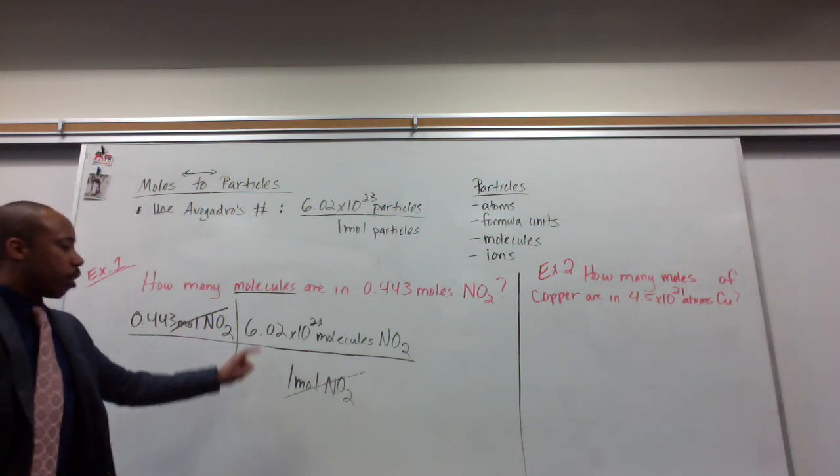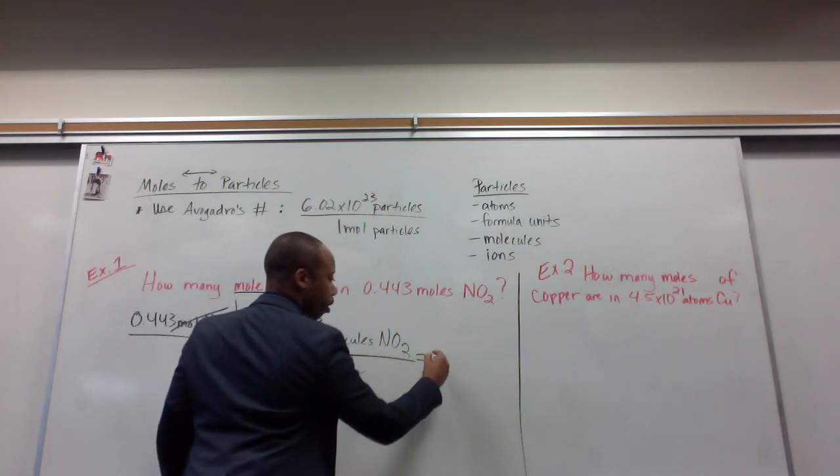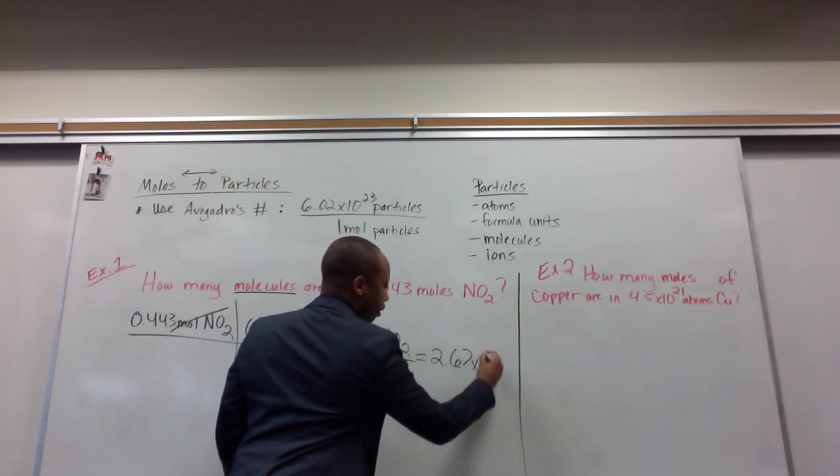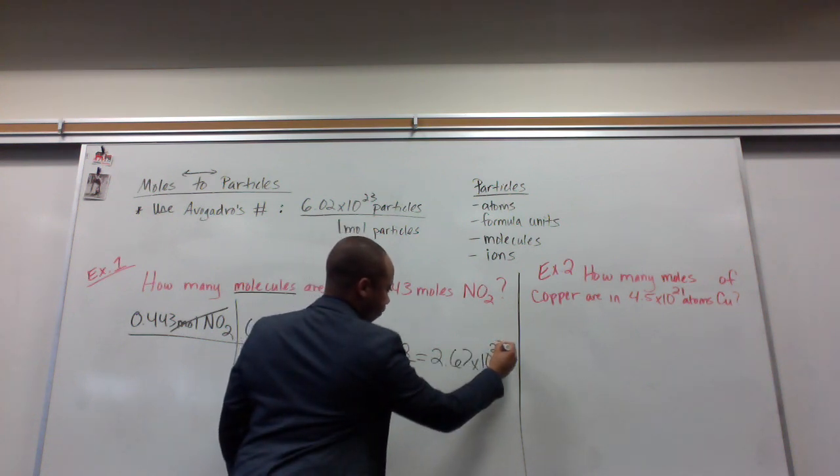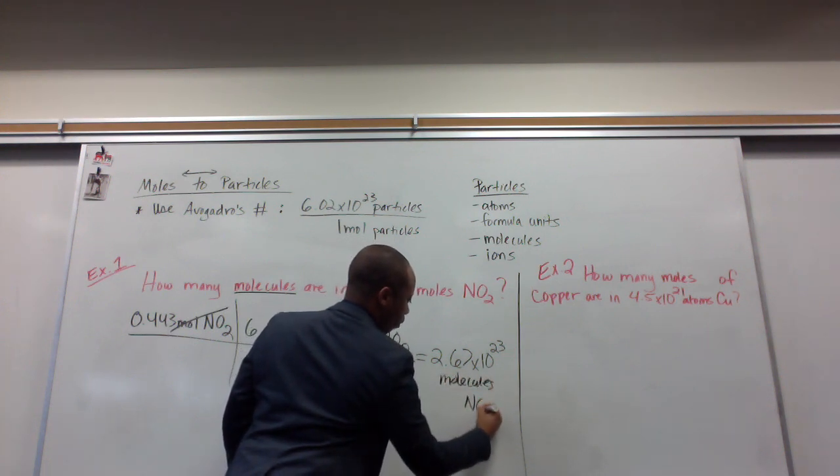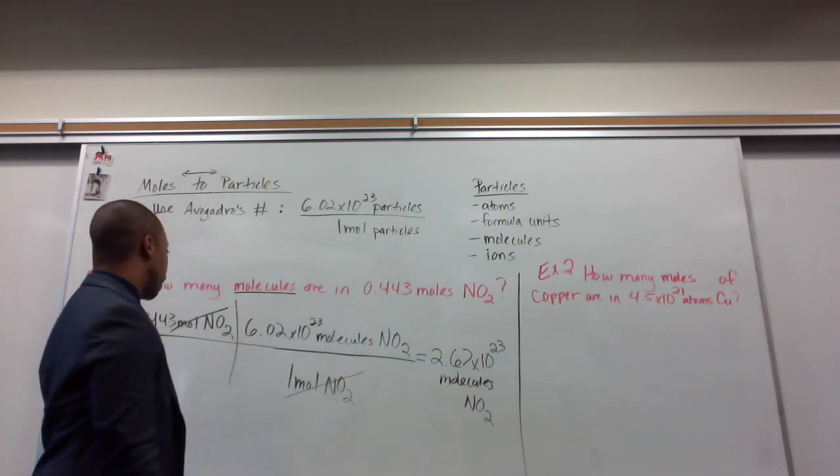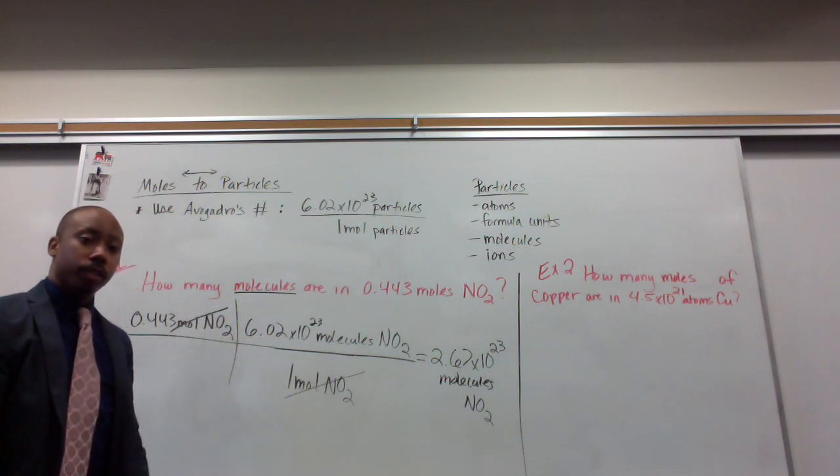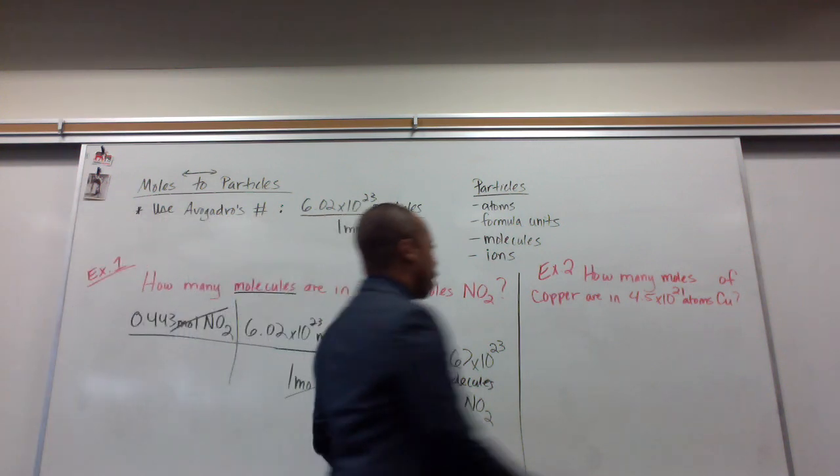Now I simply multiply across and divide by 1 to keep it the same. This equals 2.67 times 10 to the 23rd molecules of NO2. 2.67 is accounting for my three significant figures given to me here and here. So three significant figures. That is moles to molecules. The other way around.